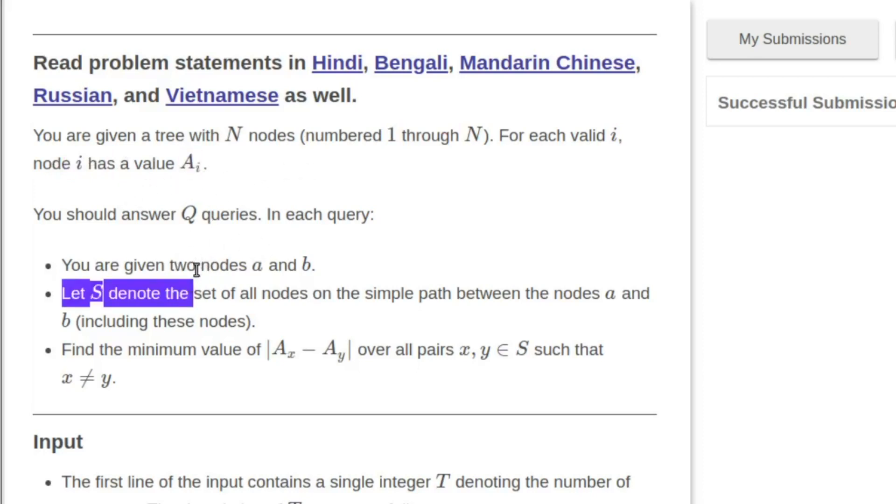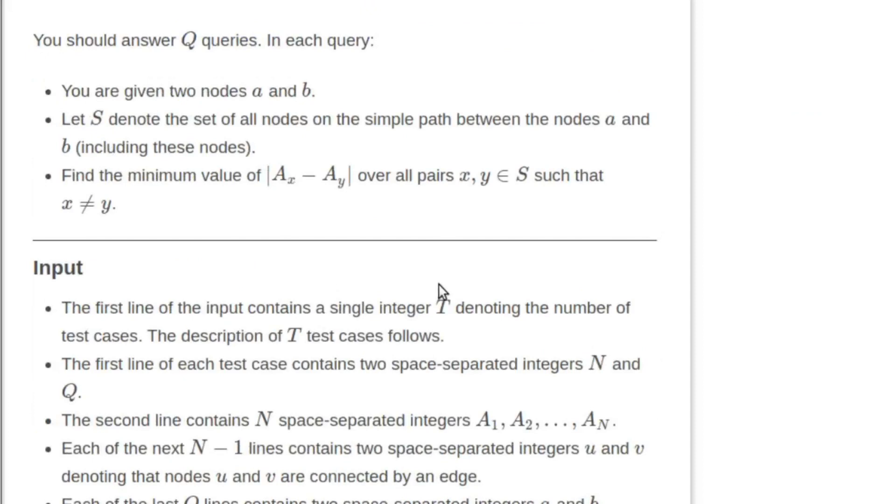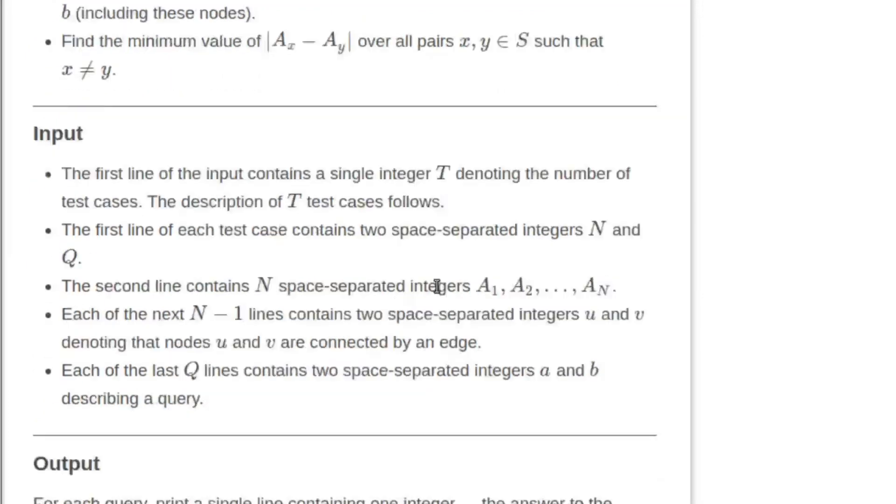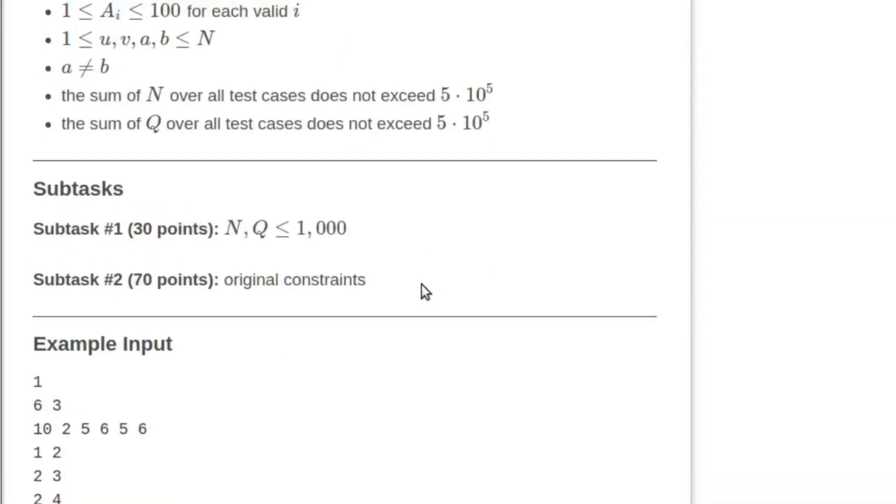You have to answer Q queries. In these queries you are given two nodes a and b, and you have to find the minimum value of ax minus ay for some pair (x, y) where x is not equal to y, over all pairs in the path from a to b.